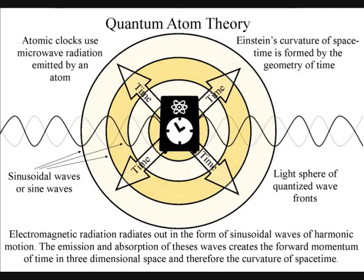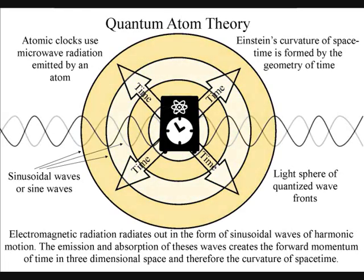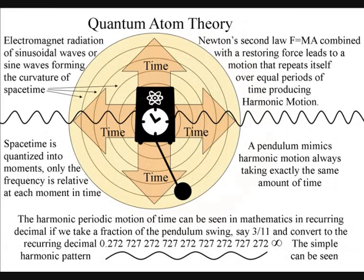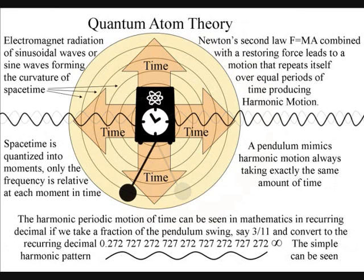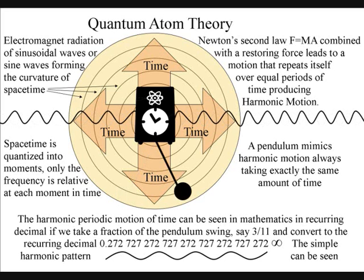If we look at the way we measure time using an atomic clock, it is by measuring electromagnetic radiation in the form of microwaves.